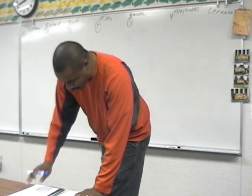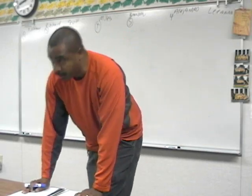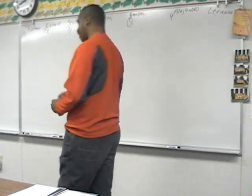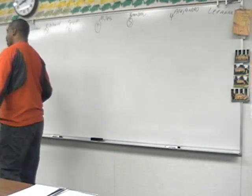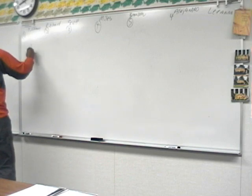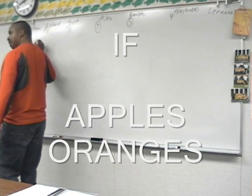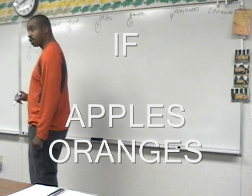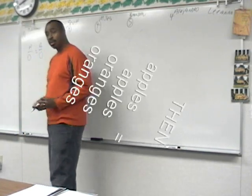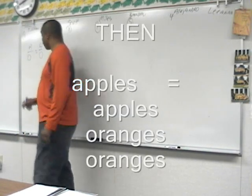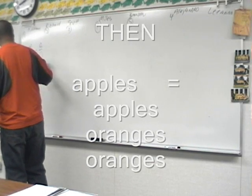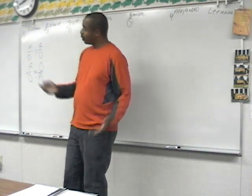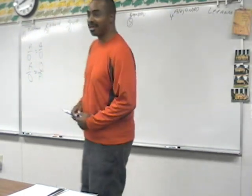The key to setting up a proportion is making sure that the amounts being compared are consistent. So if we're talking about apples to oranges, then on this side of the equal sign we better be talking about apples to oranges — or else it ain't equal. If we set it up as oranges to apples on one side, we've already got the answer wrong.